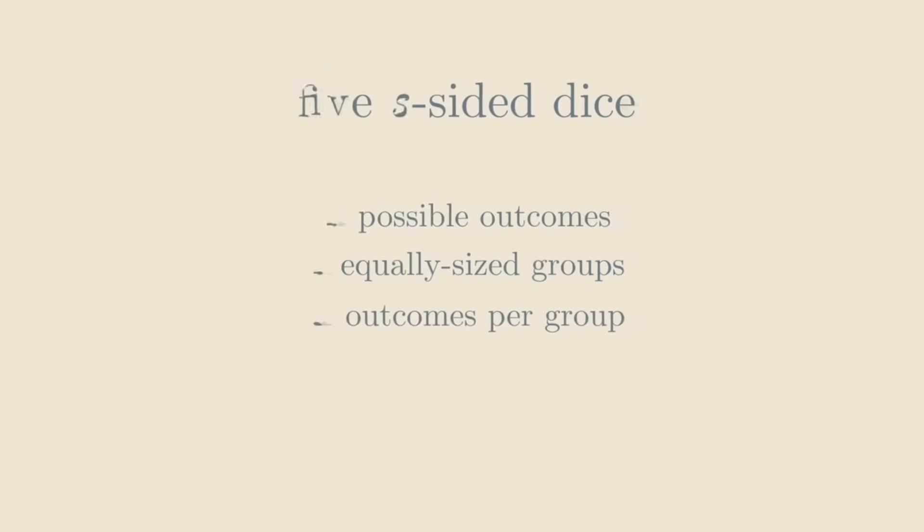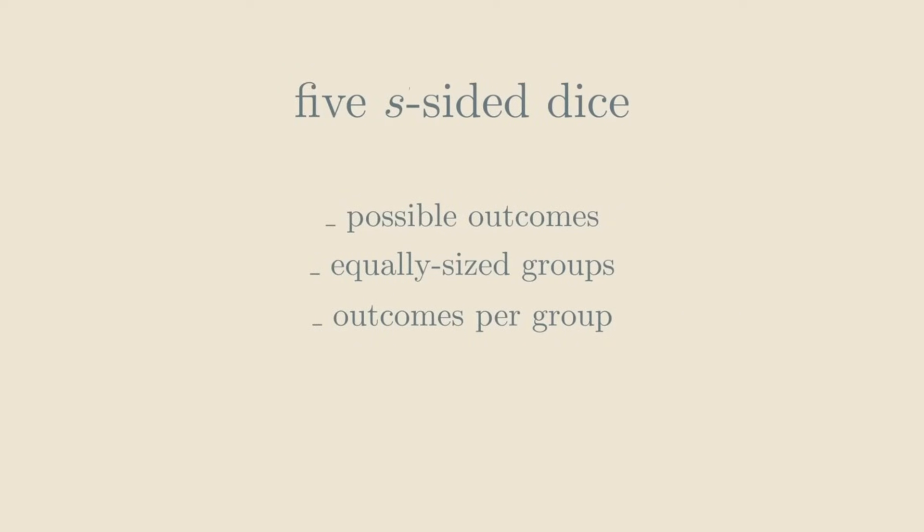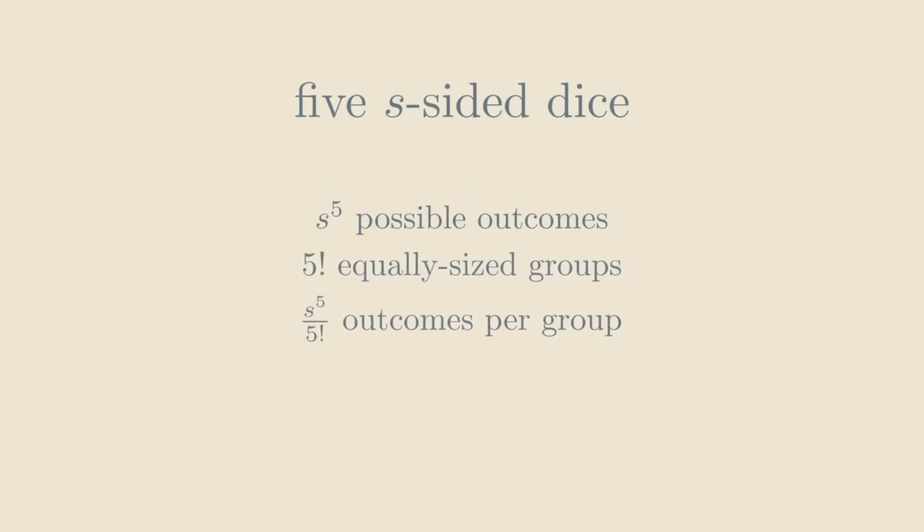Applying this reasoning to 5 players, let's say all dice have s sides, then there would be s to the 5th possible outcomes. So s to the 5th needs to be divisible by 5 factorial, since that's how many orderings of players there are. But this implies that s to the 5th needs to be divisible by 5 factorial, and that in turn means that s must be divisible by 2, 3 and 5. So it's at least 30.